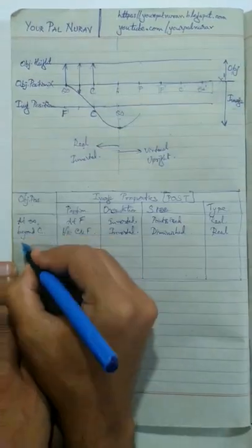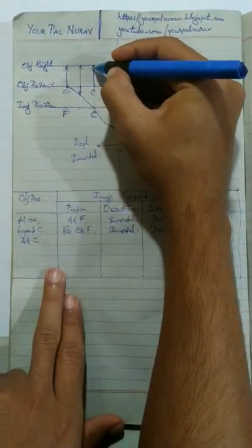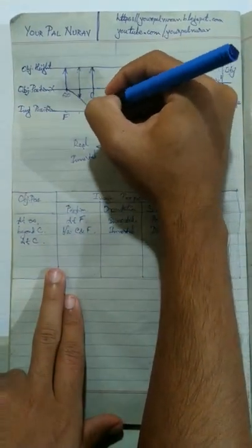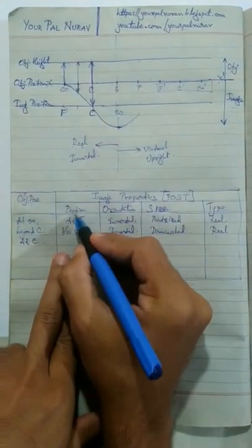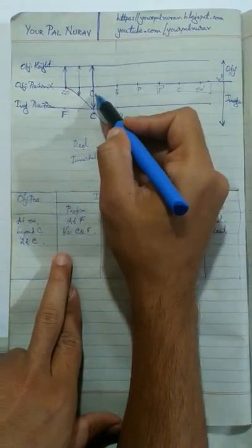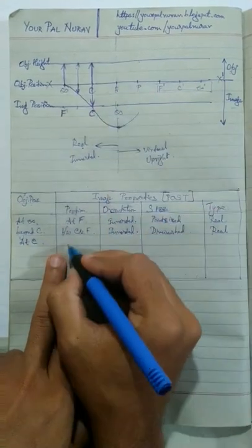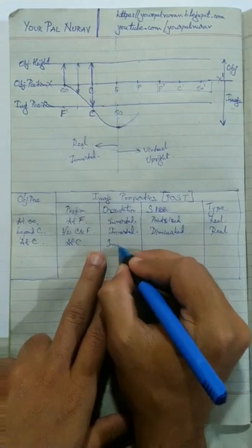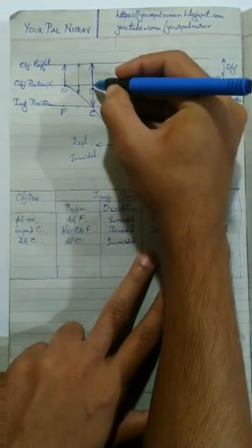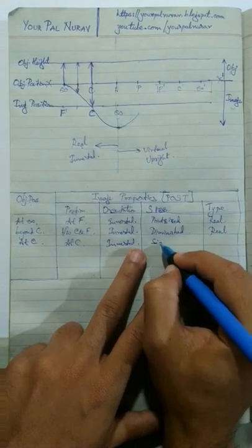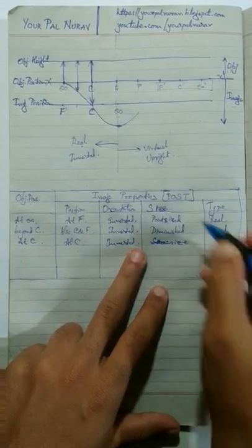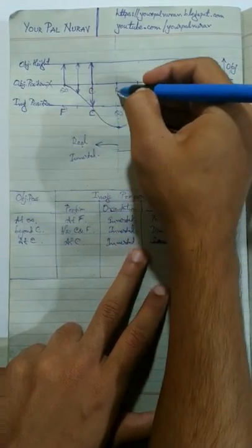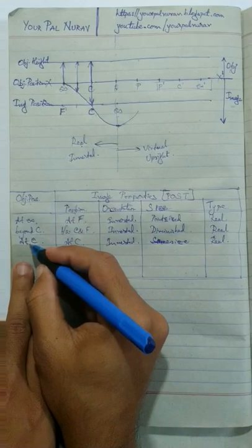Case 3: when the object is at C, we have already seen that the image size is equal to the object size. Position of the image is also at C. Orientation is inverted. Size is same size. Type is real because the image lies on the left side of the dividing line.